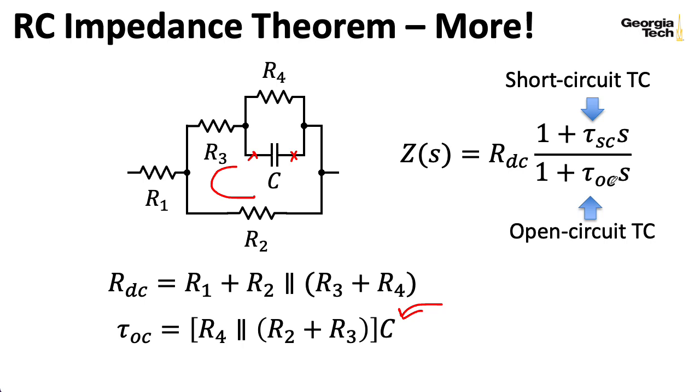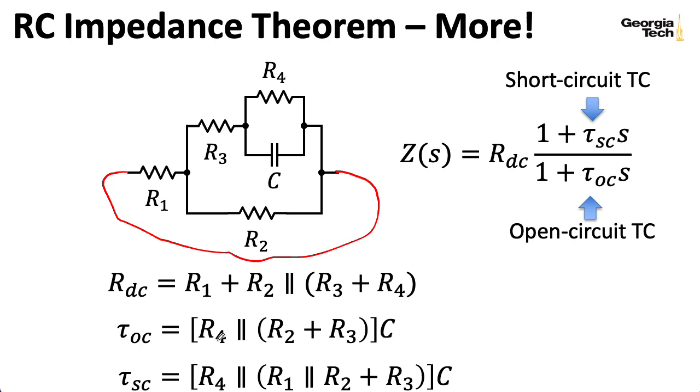And let's see, for the short circuit time constant, I take the left edge of R1, and I connect it to the right edge over here. And basically, this looks like the open circuit time constant, except where I originally had R2, I now have R1 in parallel with R2. All right, now I have all of our pieces.